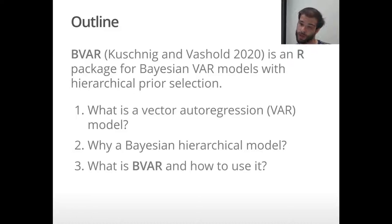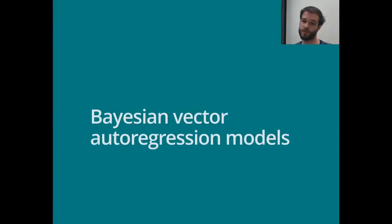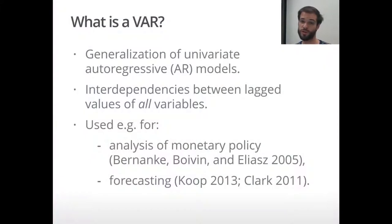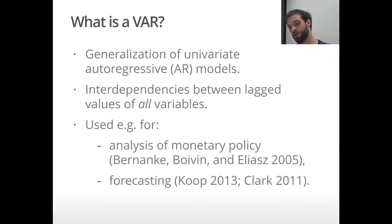First I'll talk about what actually is a vector autoregression model, then why you might want to estimate a Bayesian hierarchical model, and then Lukas will demonstrate what BVAR is and how you actually use it. Vector autoregression models are a generalization of univariate autoregressive models. The idea is that there are interdependencies between lagged values of all variables, and they're used for example to perform analysis of monetary policy and to forecast infrastructural analysis.